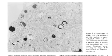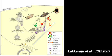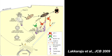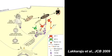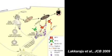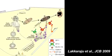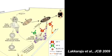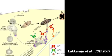Melanosomes mature through four morphological stages. After forming from vacuolar endosomes, melanin is synthesized and deposited onto fibrillar sheets in the organelle's lumen. Enzymes required for melanin synthesis must be delivered to the maturing melanosome.